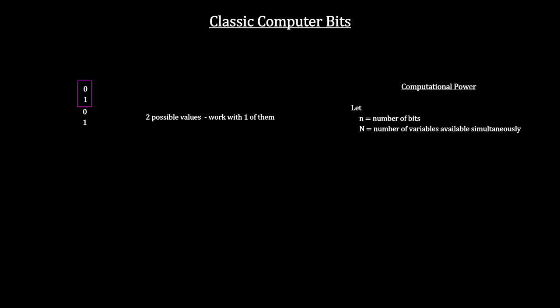The key difference between classical computers and quantum computers starts with their basic unit of information. For classical computers it is the bit, with two values per bit, zero or one.